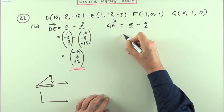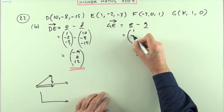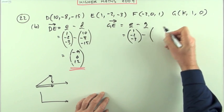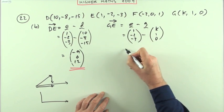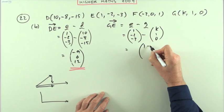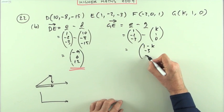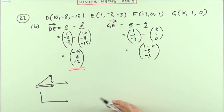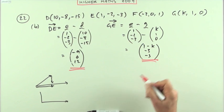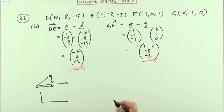I want GE first of all. So E minus G: E is (1, -2, -3), G is (k, 1, 0). Subtracting them would be 1 minus k, -2 take away 1 is -3, -3 take away nothing is -3. There's my two vectors. Those two vectors are meant to be perpendicular, that means their scalar product should equal zero.